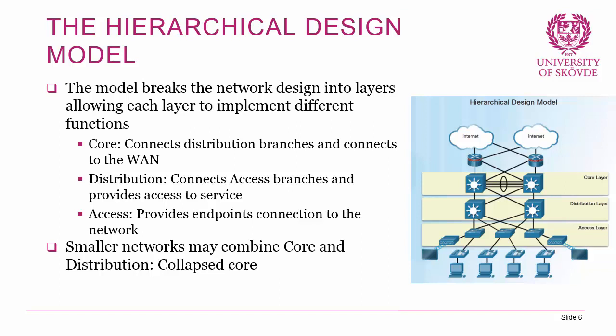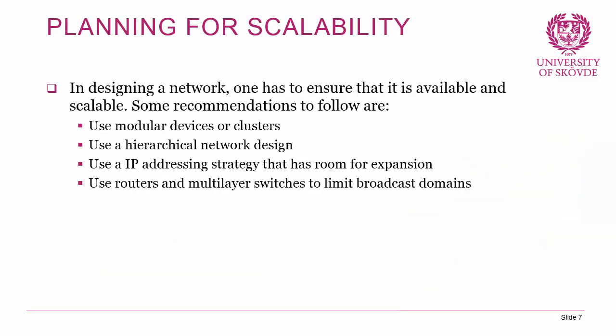The idea with the distribution layer is to be a high-speed network for internal switching, routing, VLAN routing, and similar functions. Finally, the access layer provides endpoint connection to the network — it's where your clients connect. In smaller networks, you may combine the core and distribution layers, and then it's called the collapsed core design. That's a very common question for Cisco tests.